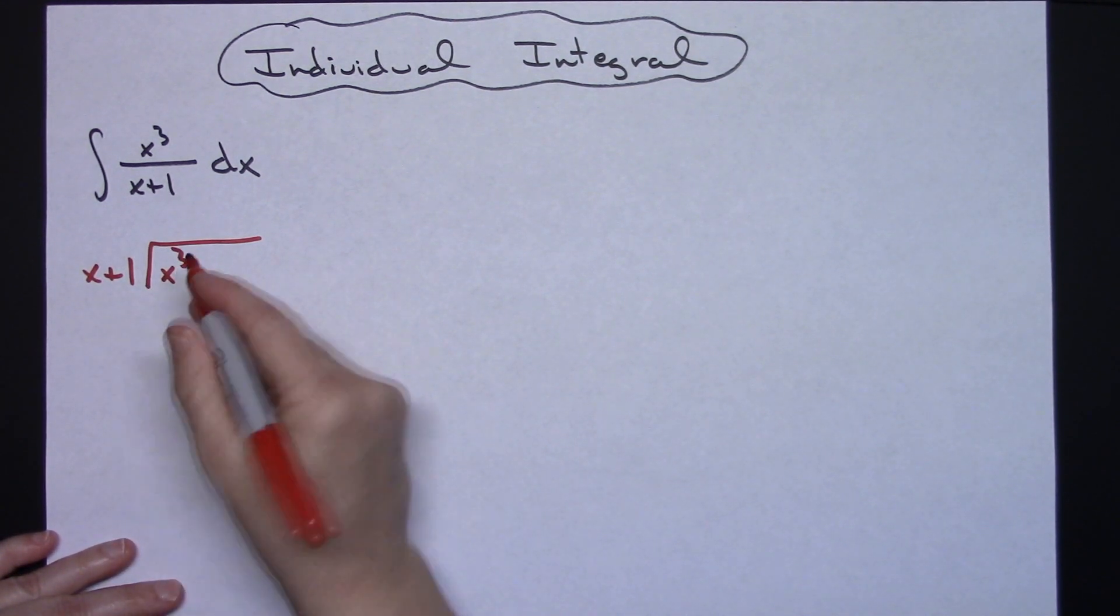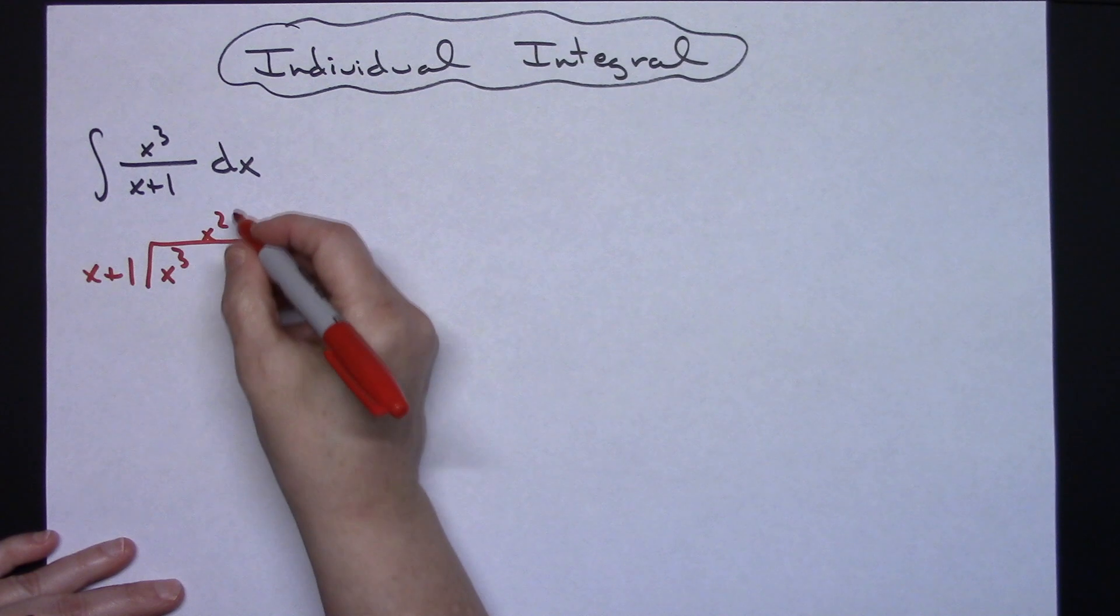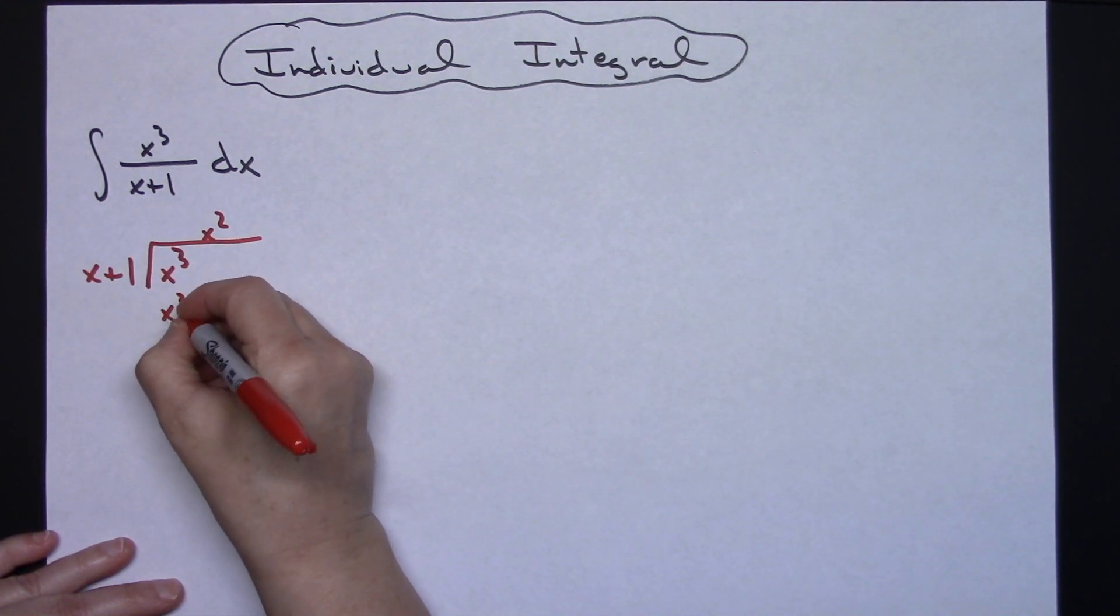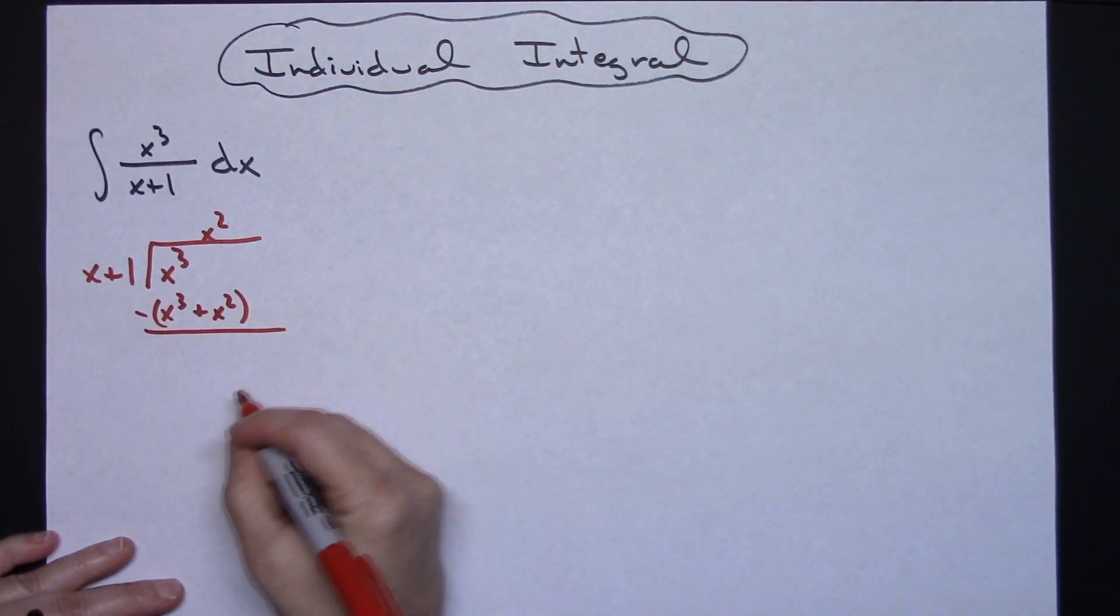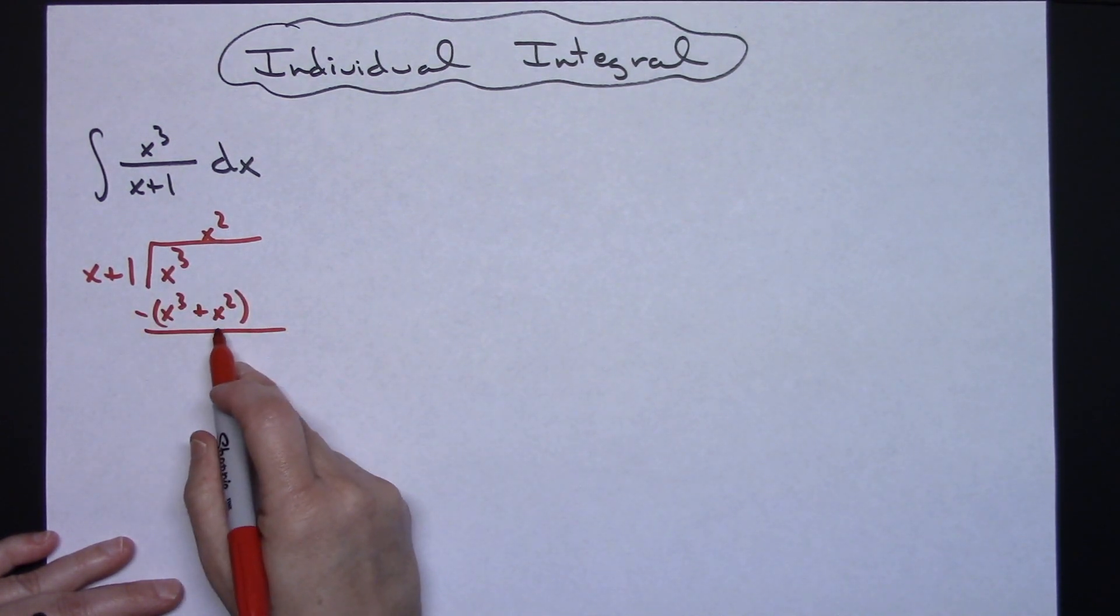X goes into X³, X² times. When I multiply coming around, I'll have an X³ plus an X². That quantity's got to be subtracted. The X³ will fall out, leaving me with a negative X².